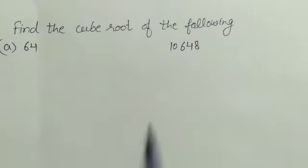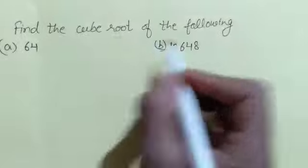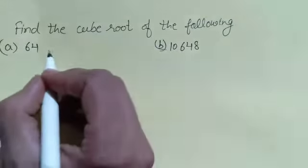Find the cube root of the following. This is two parts, A and B. We'll use the cube root prime factorization method.